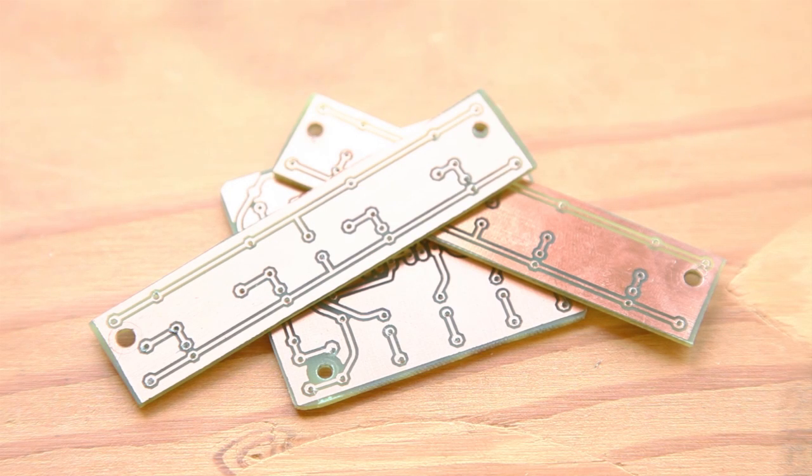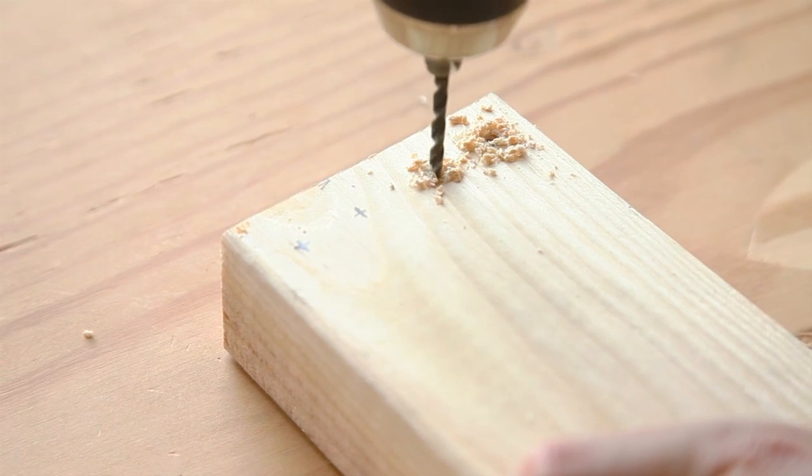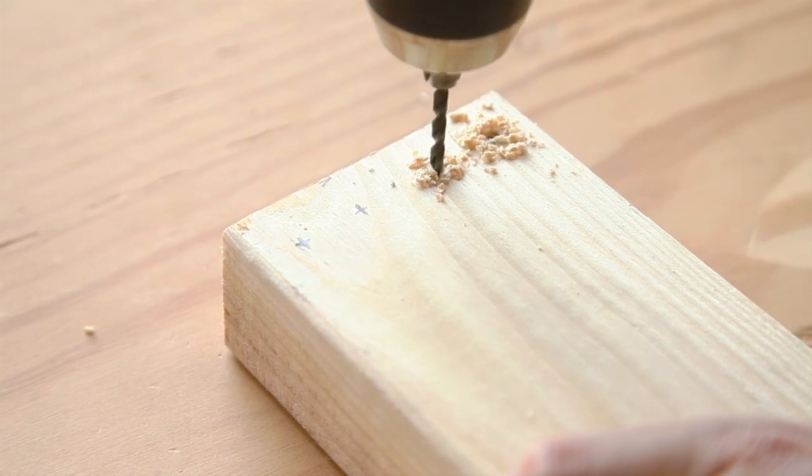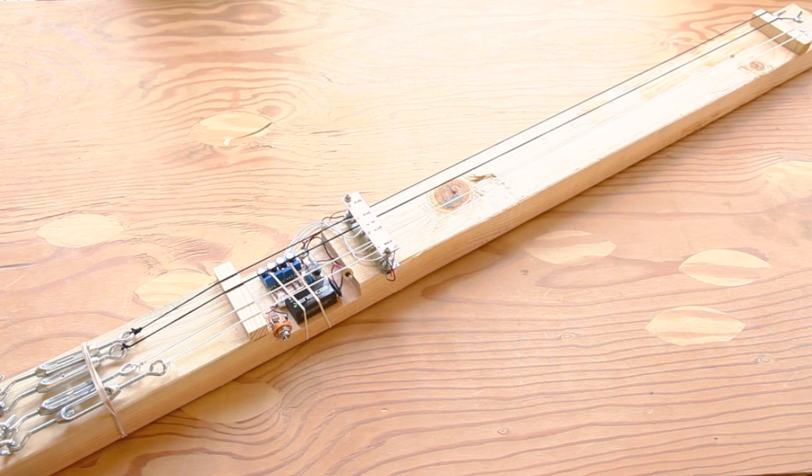In this project, we'll build a transducer and amplifier using circuit boards we've etched ourselves, and then we'll do some light carpentry in order to assemble our completed project into a rockin' optical guitar.